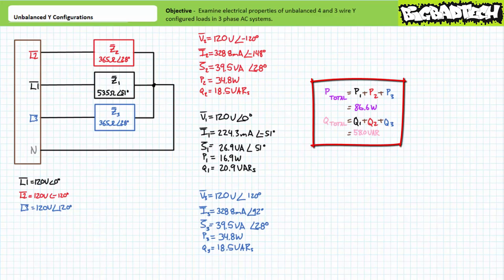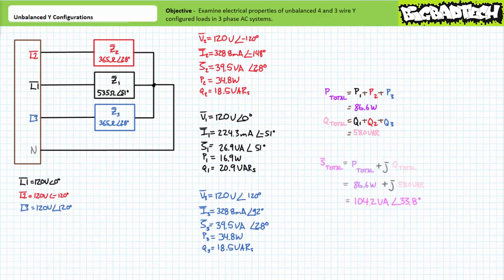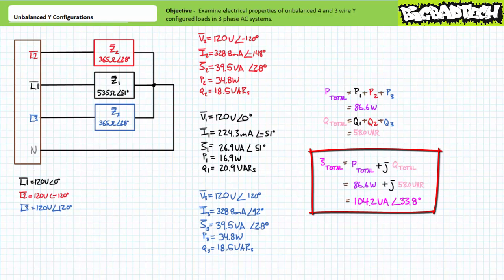Note for unbalanced conditions one cannot simply multiply an individual branch real power figure by three. Similarly, total reactive power for this system equals the summation of individual reactive powers, yielding a total reactive power figure of 58 vars. Given the total real and total reactive power, we package these as the real and imaginary components of a rectangular number: 86.6 watts + j58 vars, then convert to polar form as 104.2 volt-amperes at an angle of 33.8 degrees, which yields our total apparent power figure.